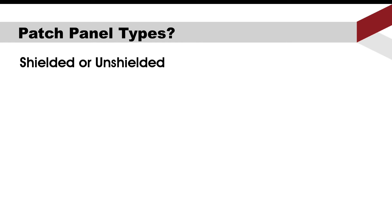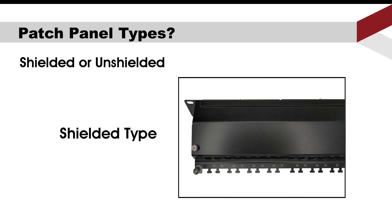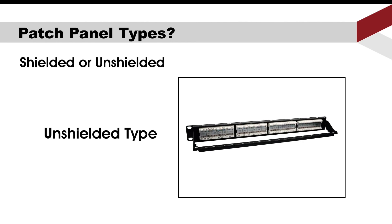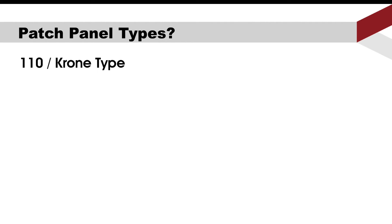Fourth, shielded or unshielded. The shielded type is covered with a shielded cover at the rear. At the back, you can also tell if grounding wires need to be fixed — if yes, you will see a symbol like this. The unshielded type panel does not have this. That is the easiest way to tell which type it is.